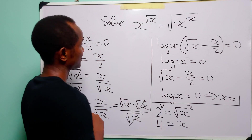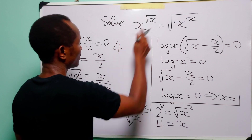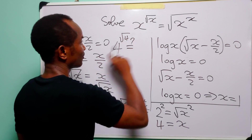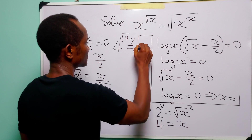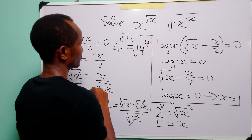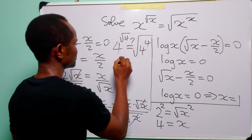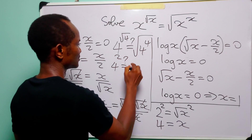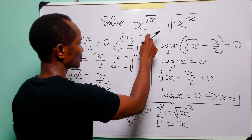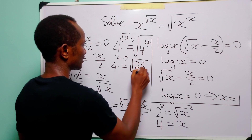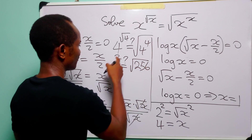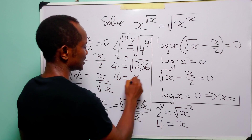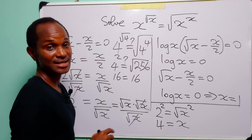Now let's check our answer. We have 4 to the power square root of 4 is equal to the square root of 4 to the power 4. Square root of 4 is 2, so this is 4 squared is equal to square root of 256. 4 squared is 16, and the square root of 256 is 16. So the answer is right.